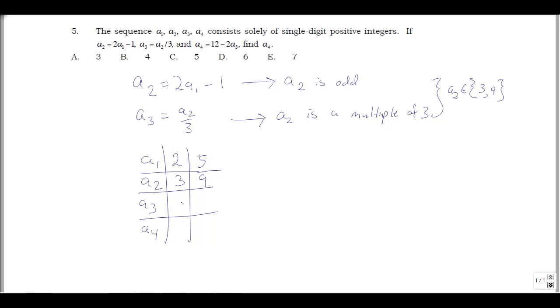Okay, now in this scenario, A3, I can just use the recurrence, A3 is A2 divided by 3, that's 1. And then A4 is 12 minus 2 times A3, so 12 minus 2, that's 10, but then A4 isn't a single digit positive integer. So what we get is this didn't work out, so the other option better work out.